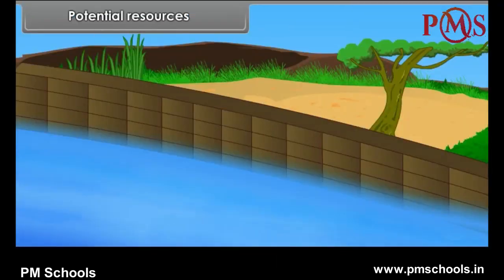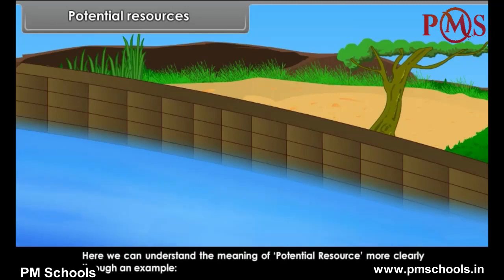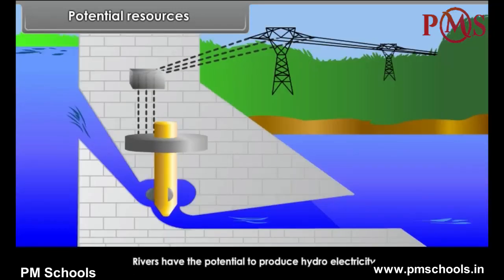Potential resources are another type of resource which exists in a region and could be used in the future. For example, rivers have the potential to produce hydroelectricity.